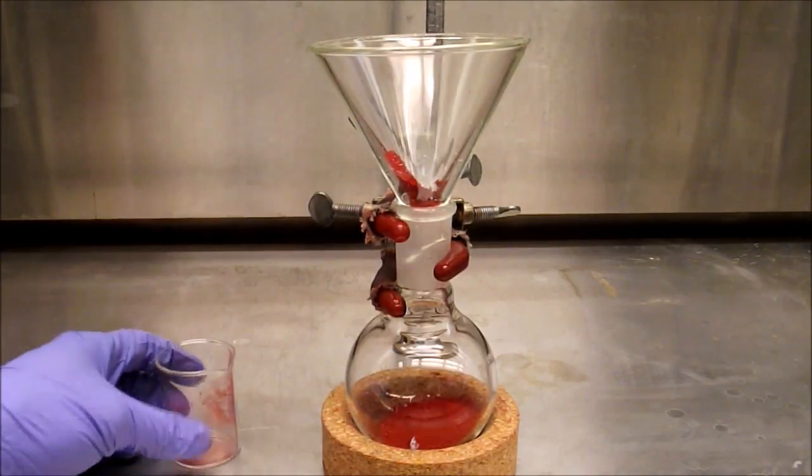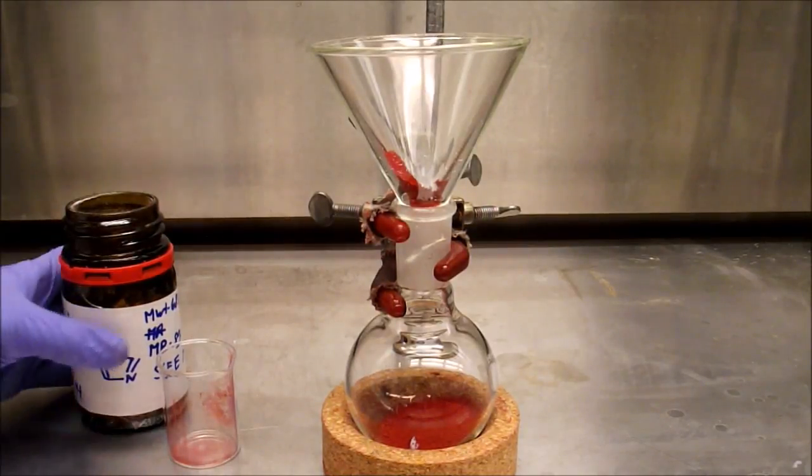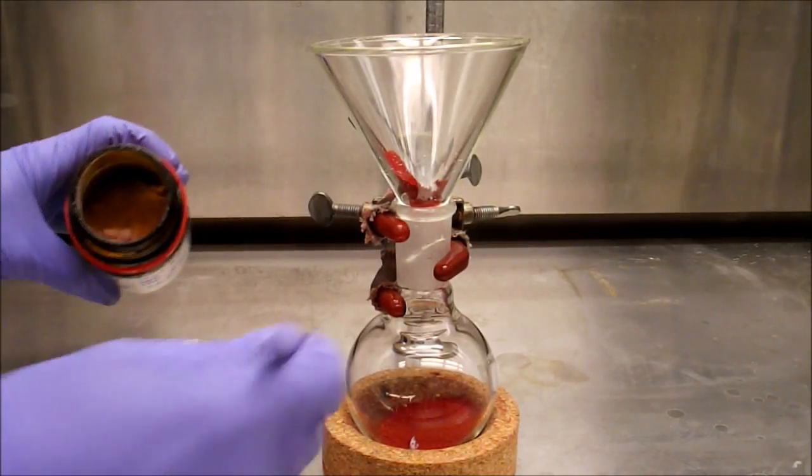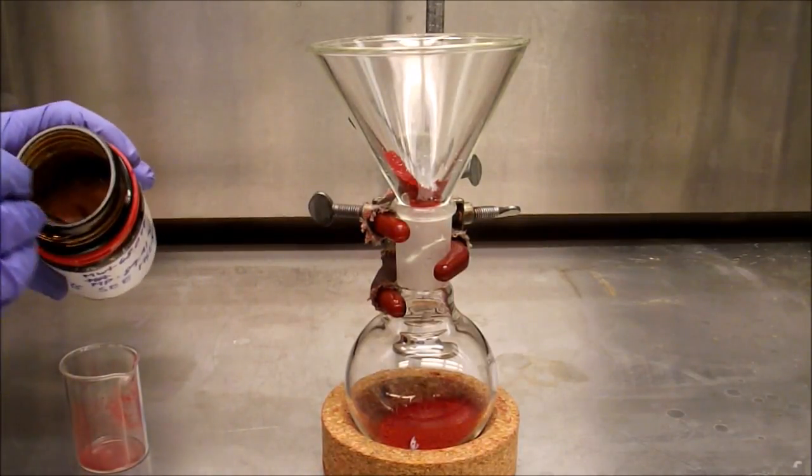Second, enough imidazole is added to the round bottom flask to half fill the flask. The imidazole is transferred using the same beaker as the perylene dianhydride to help ensure that all the perylene dianhydride has been transferred.